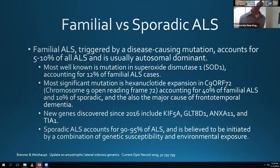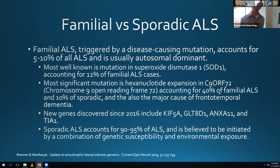About 90 to 95% of cases are sporadic, but a decent chunk are familial. The mutation I learned in med school was SOD1 - superoxide dismutase 1 - but that only accounts for about 12% of genetic causes. The most common known mutation is C9ORF72 - chromosome 9 open reading frame 72 - which will appear on the boards more so than SOD1.